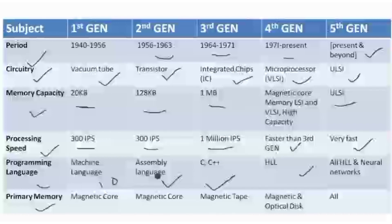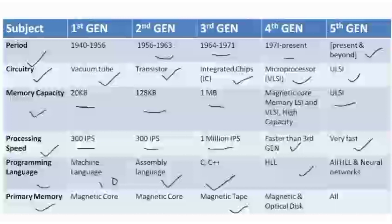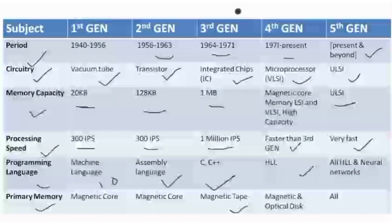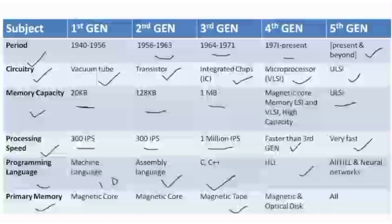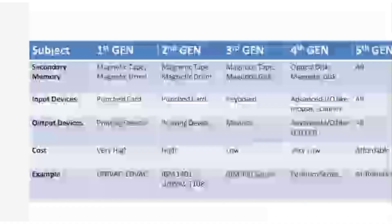The next property is primary memory. The first generation and second generation both used magnetic core as primary memory. In the third generation we started using magnetic tapes. In the fourth and fifth generations we used magnetic tapes along with magnetic disks, and in the fifth generation we are allowed to use all types of devices.